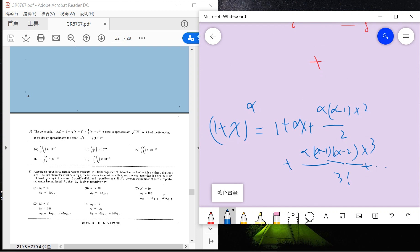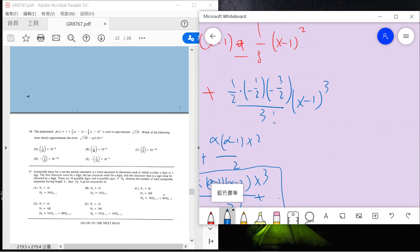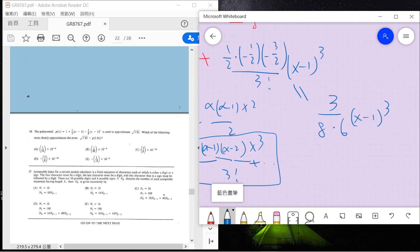We need the error term, so the error term here. This term is -3/8 divided by 6, and minus minus 1 cubed, so the 1 over 16 times (x-1)³.